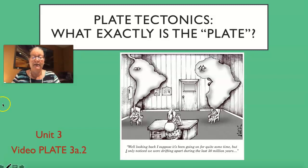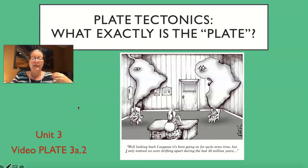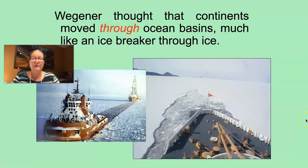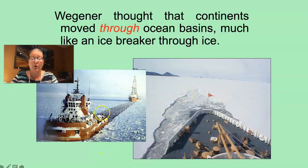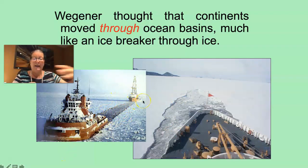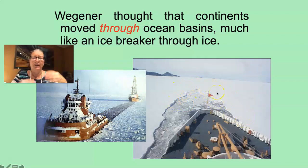We're moving on to our next plate tectonics video. What is the plate in plate tectonics? What was it that Wegener didn't understand that was crucial to understanding how plates move? What Wegener thought was that the continents moved through ocean basins like an icebreaker moving through ice — a boat that moves through the ice, leaving a big wake or hole behind it, and pushing ice upward ahead of it.